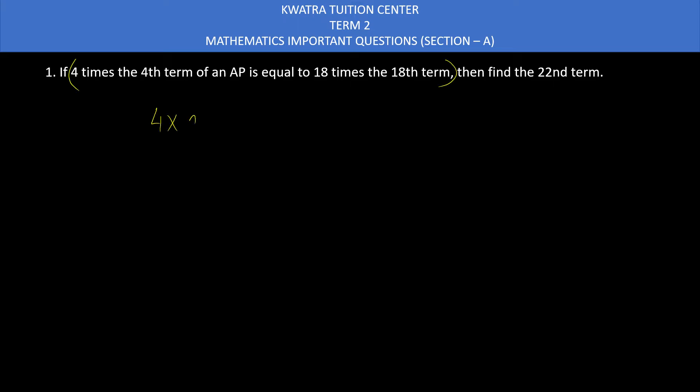We have the relation 4 into the 4th term equals 18 into A18. A4 can be written as A plus 3D, because the An formula is A plus (n-1)D.